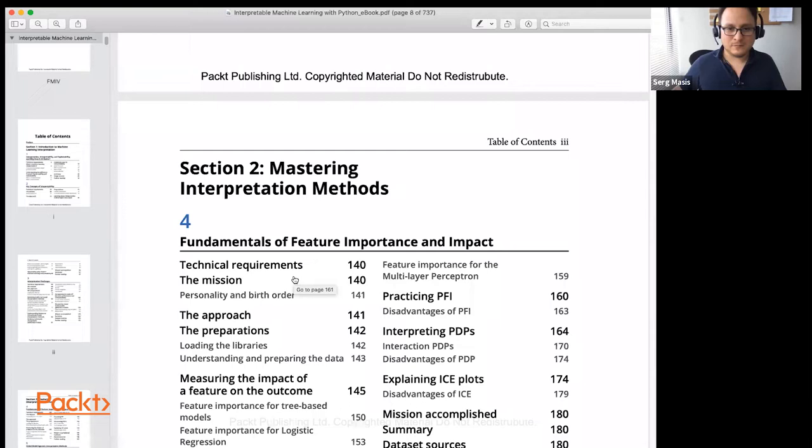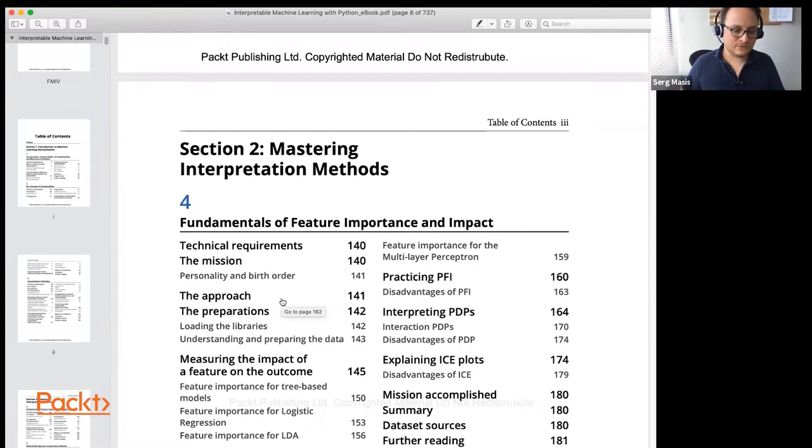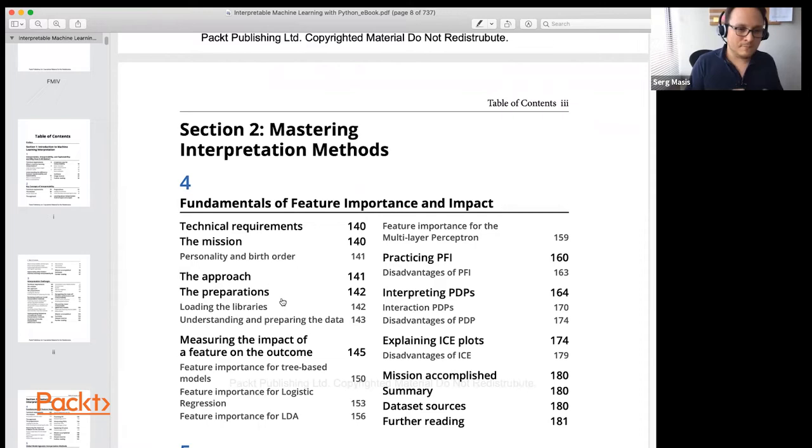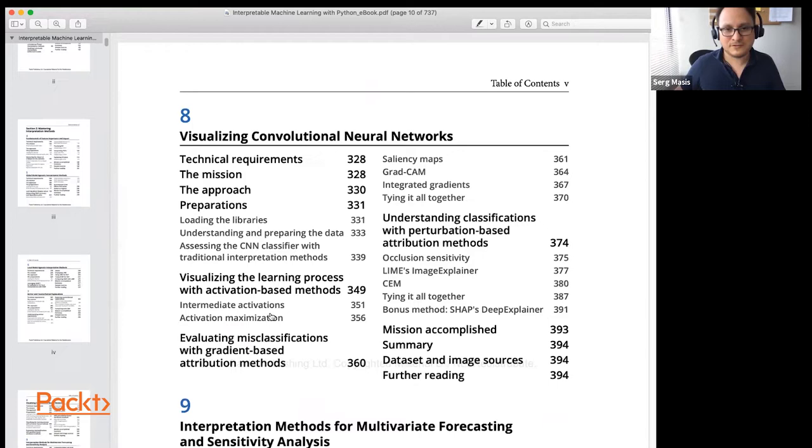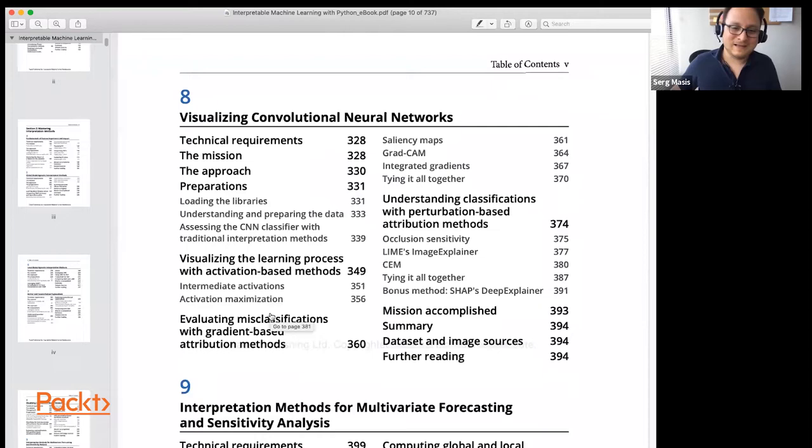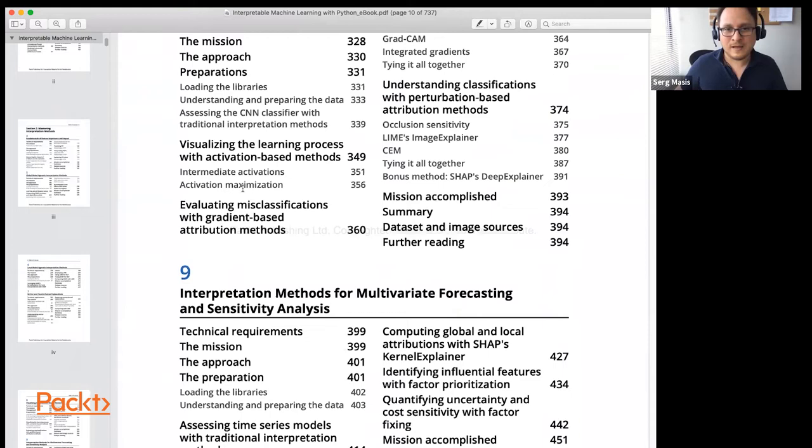Followed by that, there's the mastering interpretation section, which goes between chapter four and chapter eight. So it's five different chapters devoted to different interpretation methods. So you see what is called local interpretation, global interpretation, model specific, model agnostic as well.